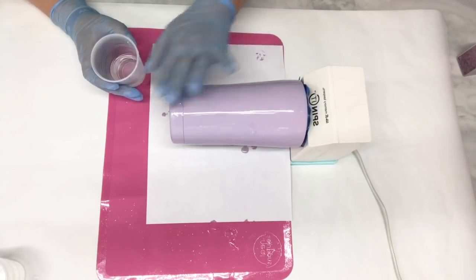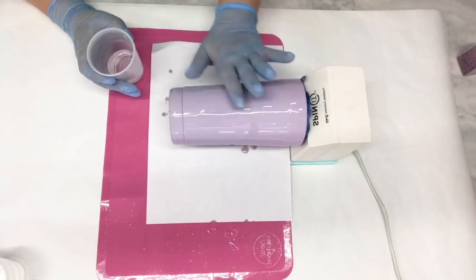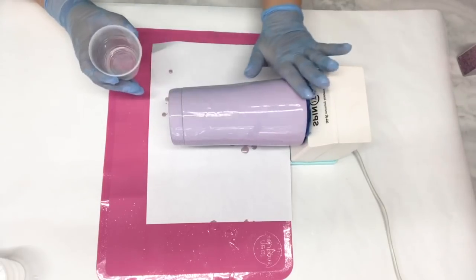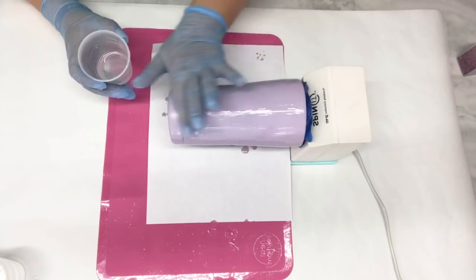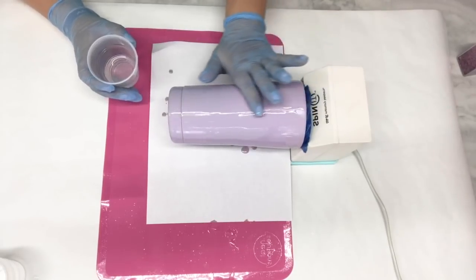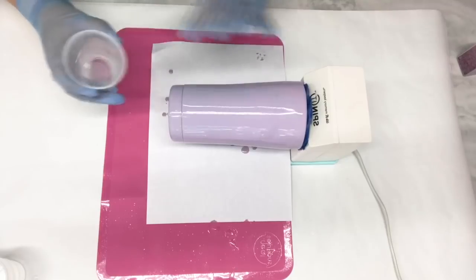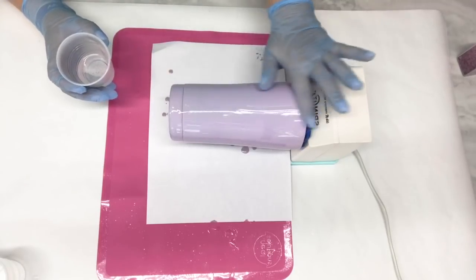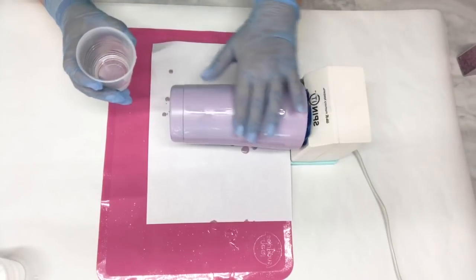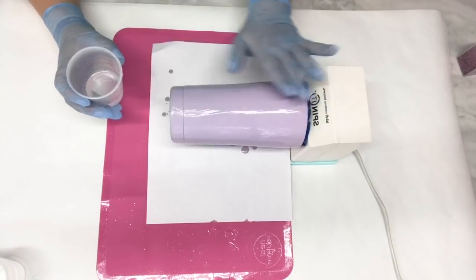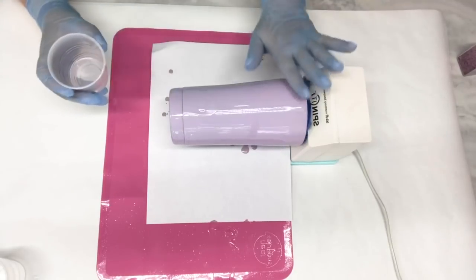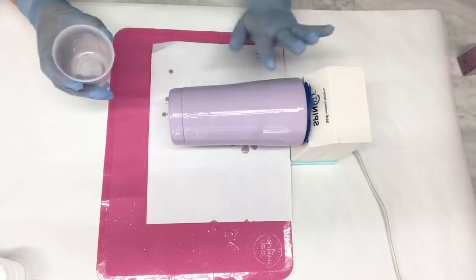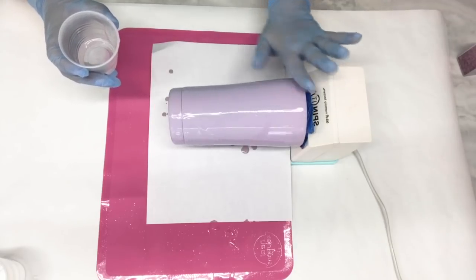This mat came from Amazon and I will link that for you in the description. It was super cheap and I've used it time and time again. The good thing about it is that the epoxy, if it falls onto it, you can just peel it off.